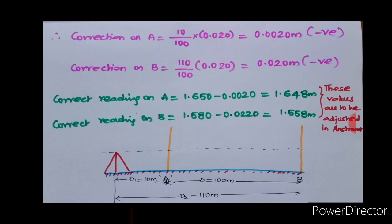Correct staff reading on A is 1.650 minus this value. And the correct reading on B is 1.580 minus 0.020.